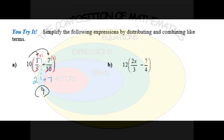The next problem we see again a distribution of 12 to 2 terms. So we're going to take the 12 and distribute it to the 2x over 3. The 3 in the denominator will cancel with the 12 leaving a 4, so 2x times 4 is 8x.